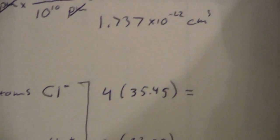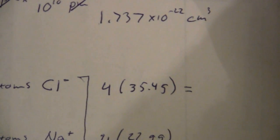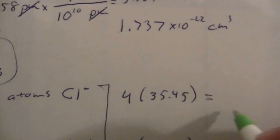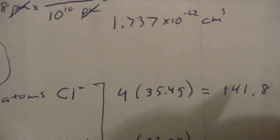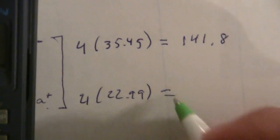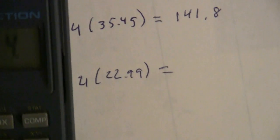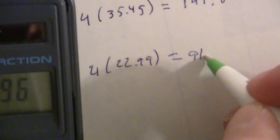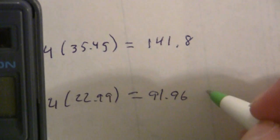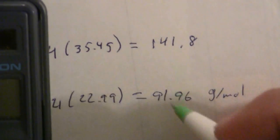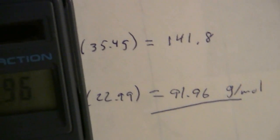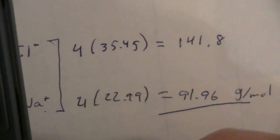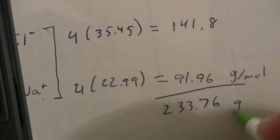So, let's go ahead and sum this up. Four times 35.45, and we get 141.8. And for the four sodium, we have four times 22.99, and we get 91.96. This is grams per mole, but I'll go ahead and sum that up. If we add the 141.8, we'll get 233.76 grams per mole.